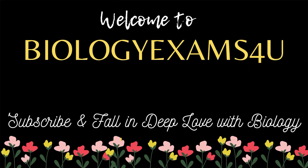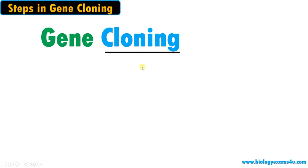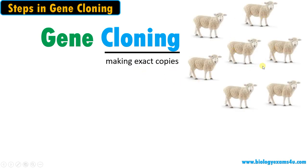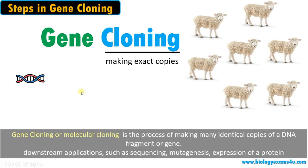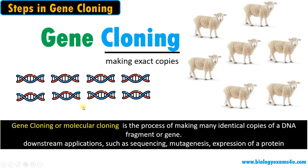Let's begin with the word gene cloning. Cloning means making exact copies. So these are clones of sheep — genetically identical copies. We have cloned sheep, that is Dolly. Similar to that, gene cloning is making copies of a gene or a DNA fragment. Gene cloning or molecular cloning is a process of making many identical copies of a DNA fragment or a gene.